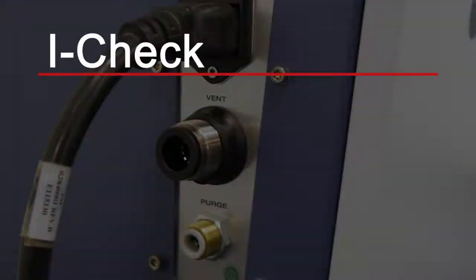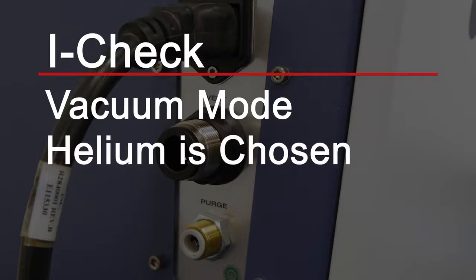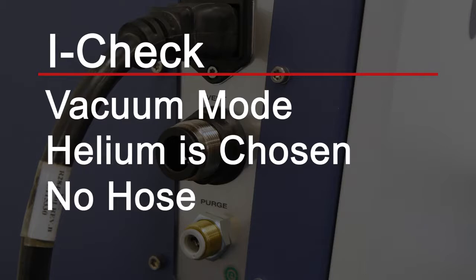The iCheck works under the following conditions: if the leak detector is switched to vacuum mode, if helium is chosen as tracer gas, and if no hose is connected to the purge inlet of the leak detector.